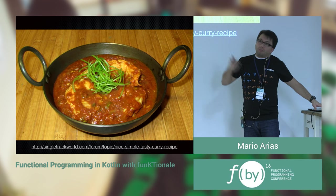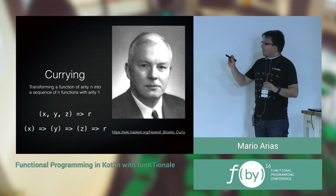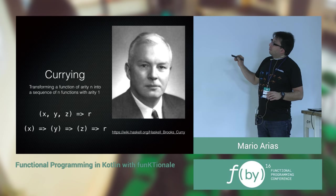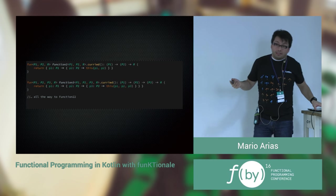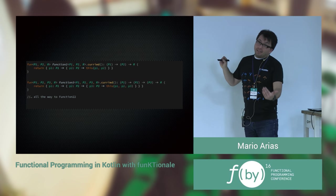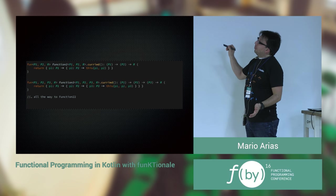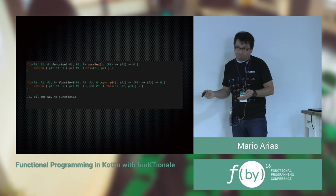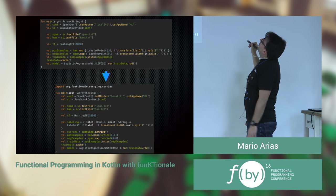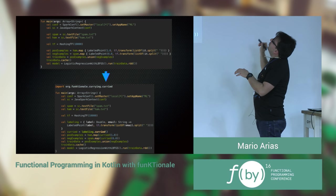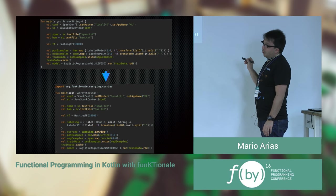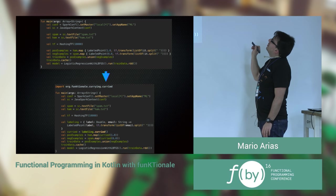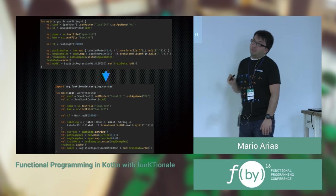We also have currying. Currying is having a function with a given arity and returning a succession of functions in exchange for one argument at a time. It's the same approach — I just define function extensions. For example, in Spark for an AI use case, I have two functions that look quite similar but differ in one parameter. I could have just one function, curry it, and call the curried version with `1` and `0` as the varying values.